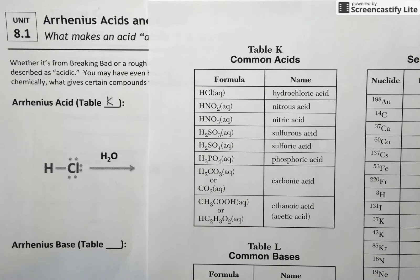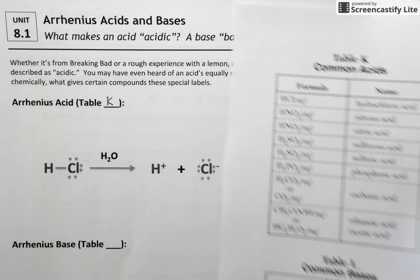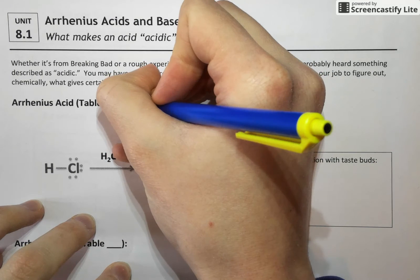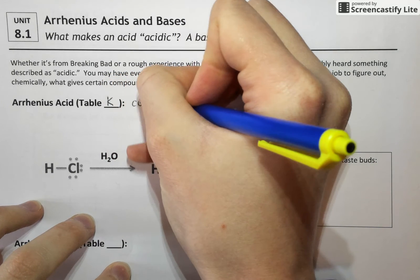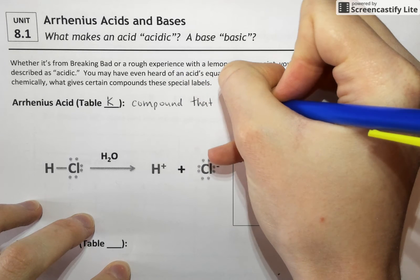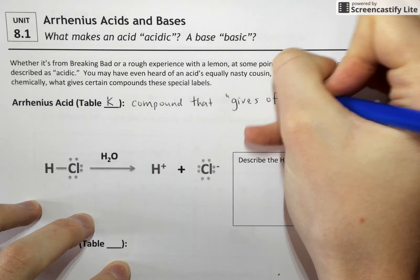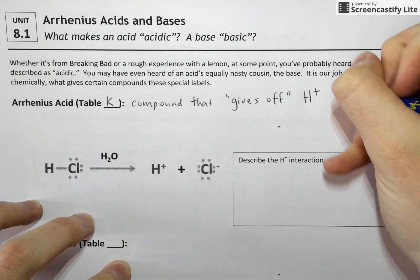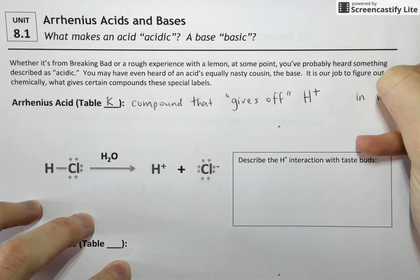And that's what Arrhenius definition kind of centers around, is the fact that an Arrhenius acid is a compound that gives off the hydrogen ion, H plus in water.